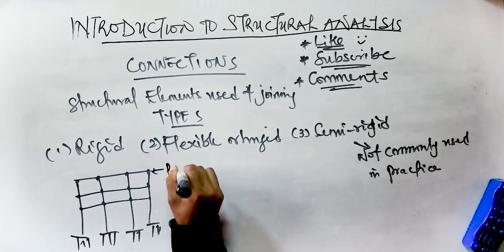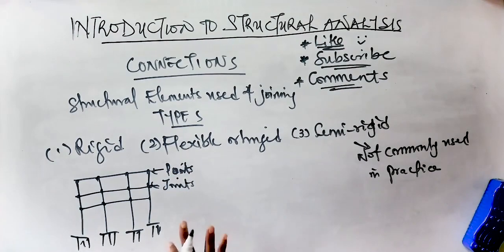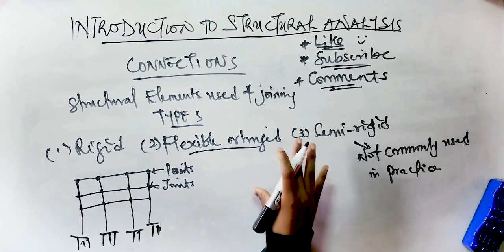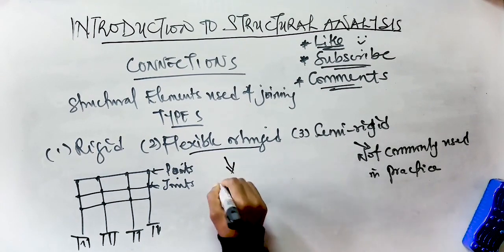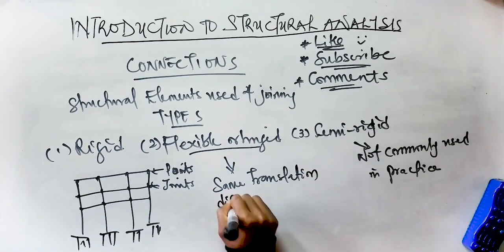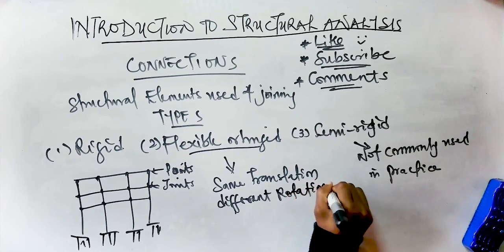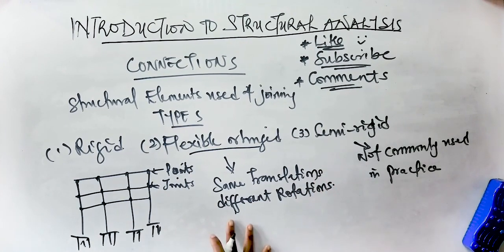The hinged or flexible joint prevents only relative translations of member ends connected to it. All member ends connected to a hinge joint have the same translation but may have different rotations. Members can rotate but not necessarily in the same way. Hinged joints are capable of transmitting forces but not moments between connected members. They are represented by small circles at the intersection of members on the line diagram.